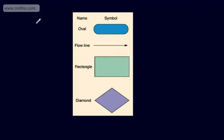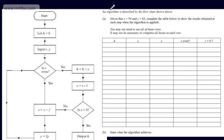So let's look at a basic algorithm and work through it. The algorithm is described by the flowchart shown. In part B, given that x is equal to 54 and y is equal to 63, complete the table below to show the results obtained at each step when the algorithm is applied. You may not need to use all rows. So let's start — the first instruction is let A be equal to 0.